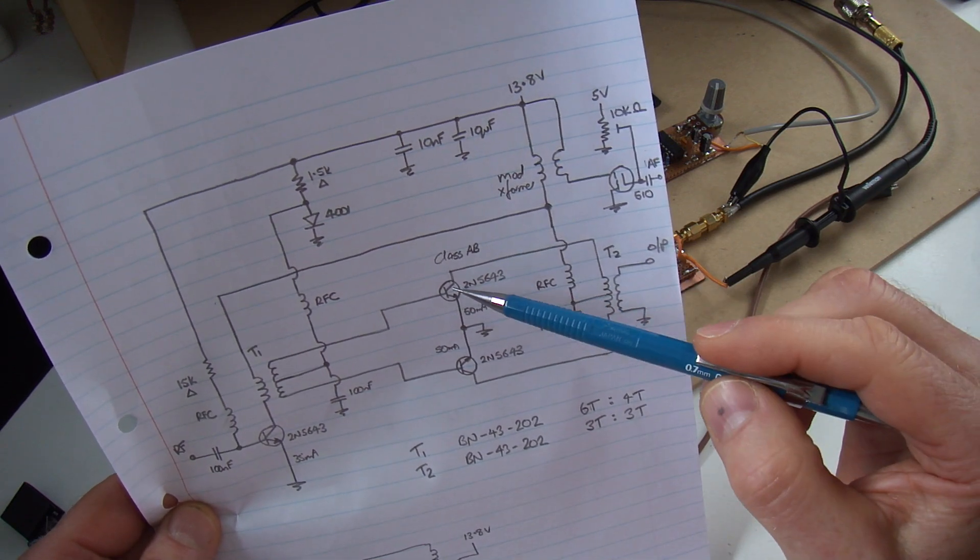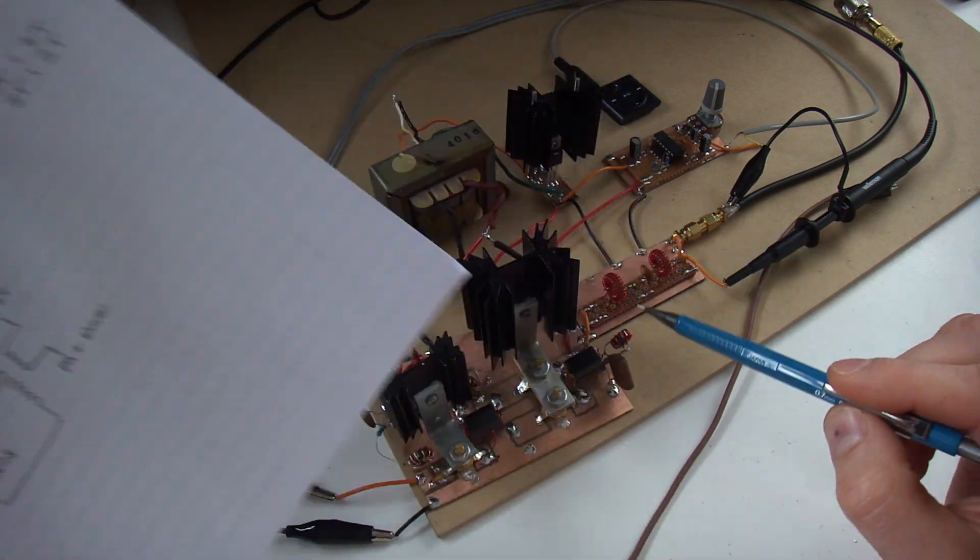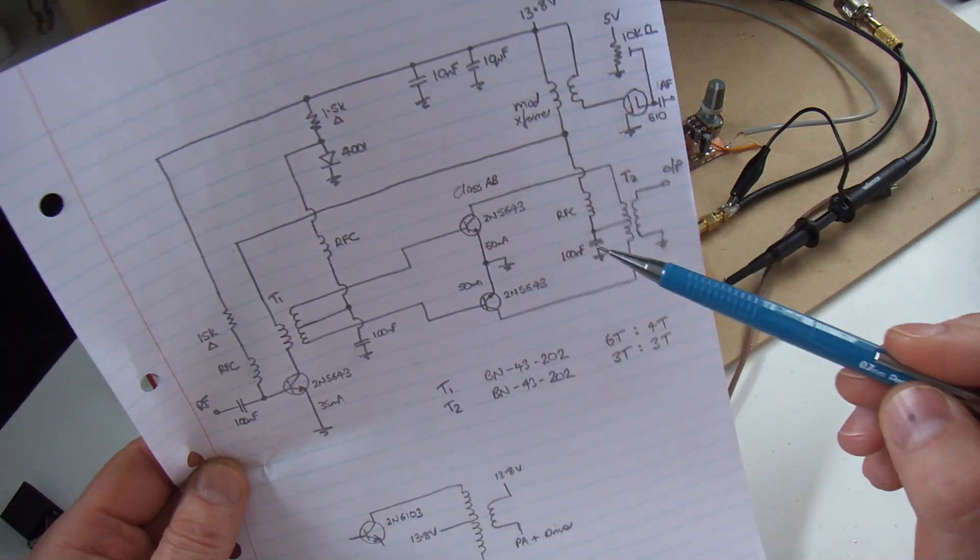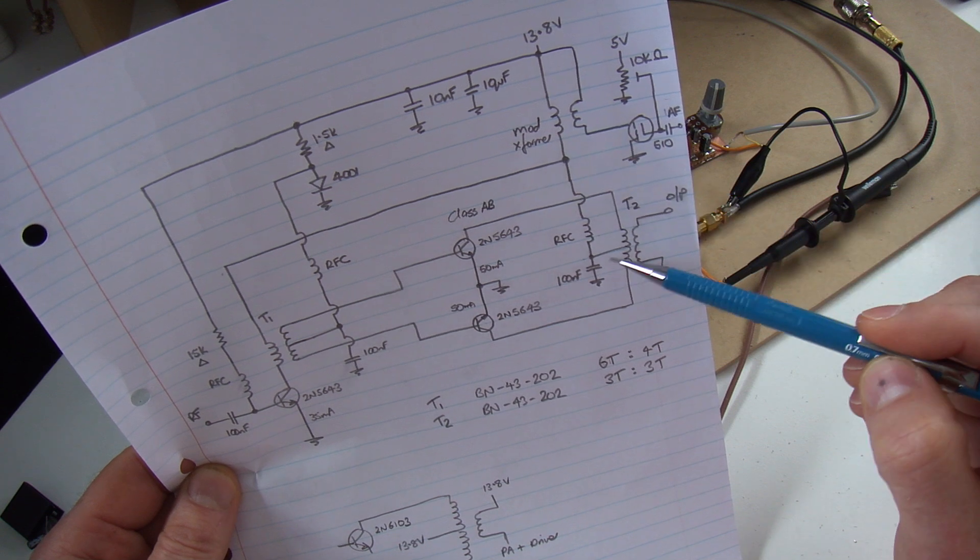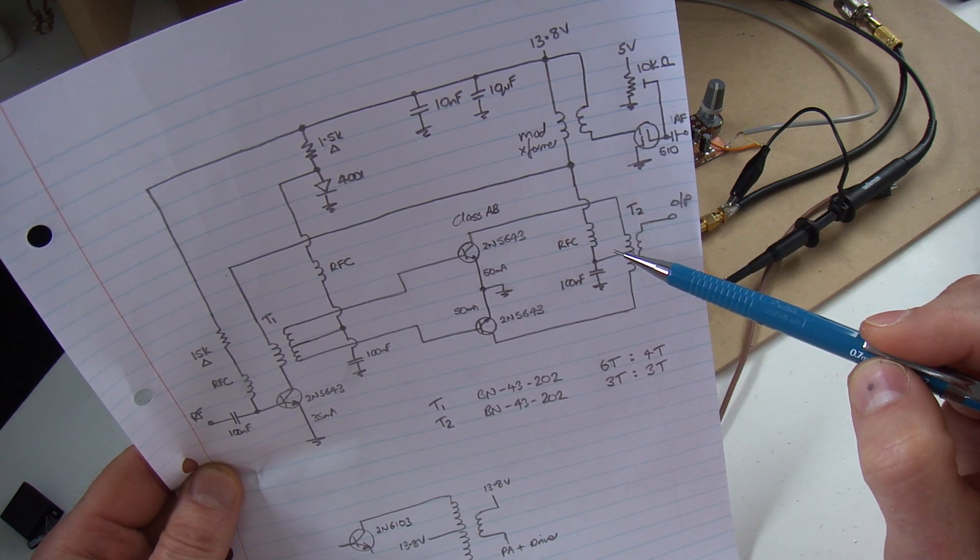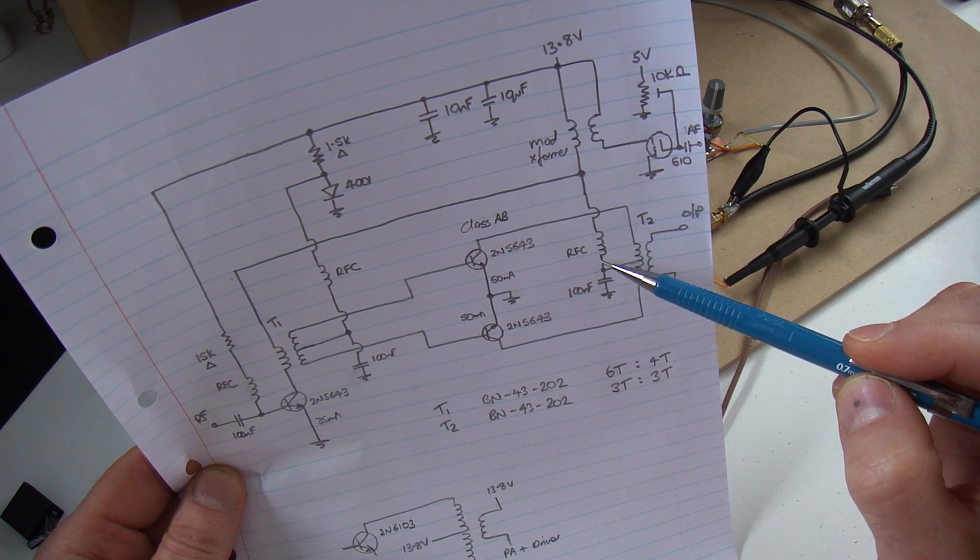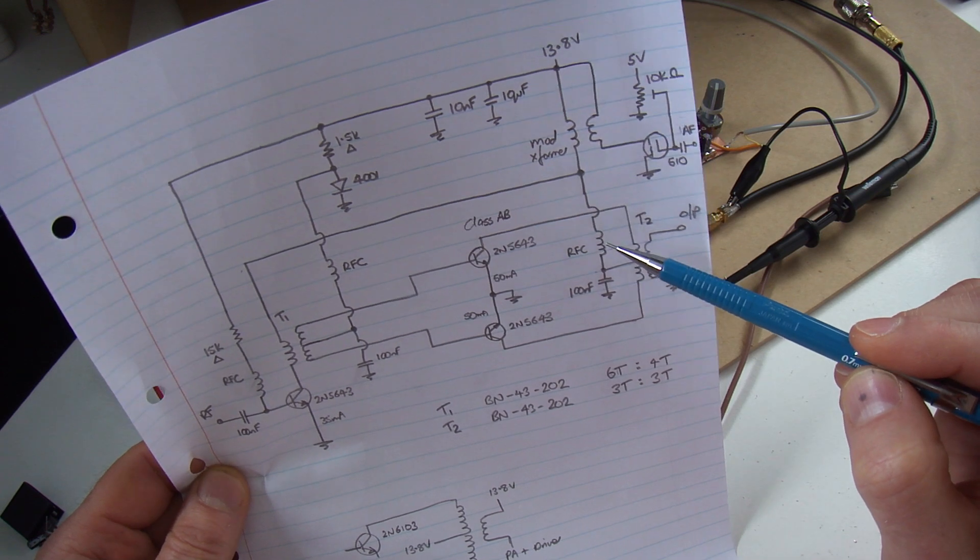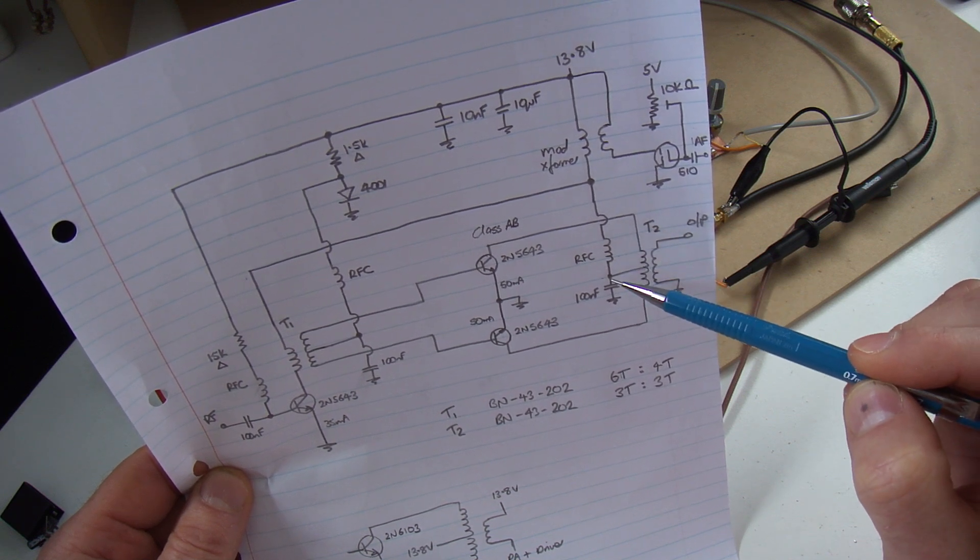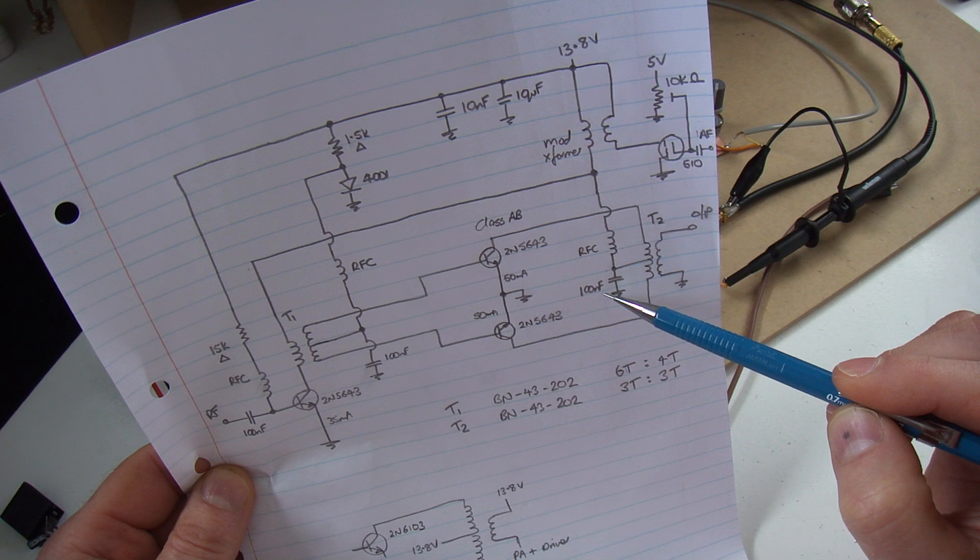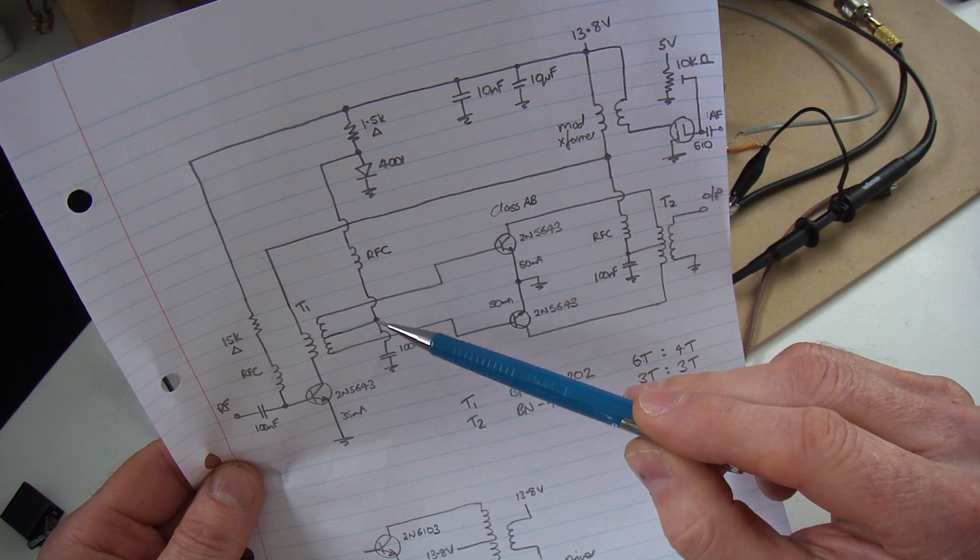On the output stage, on the two collectors of those two 5643s, through another transformer, its primary is centre tapped to allow the VCC to reach the two collectors. Here I just decided to throw in an RFC because my varying voltage here is at an audio rate, so that's not going to block the audio but will block any potential RF from coming back up through there. Another decoupling capacitor over here between that tap point and earth, as well as on the bias point over here.